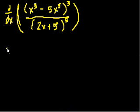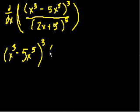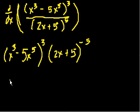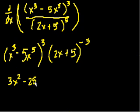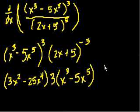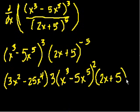This is the same thing as taking the derivative of x to the third minus 5x to the fifth, all of that to the third power, times 2x plus 5 to the minus 5 power. Now we can use the product rule. Take the derivative of the first term using the chain rule — derivative of the inside first: 3x squared minus 25x to the fourth, times the derivative of the outside, which is 3 times the entire expression x to the third minus 5x to the fifth, to the squared, multiplied times 2x plus 5 to the minus 5.